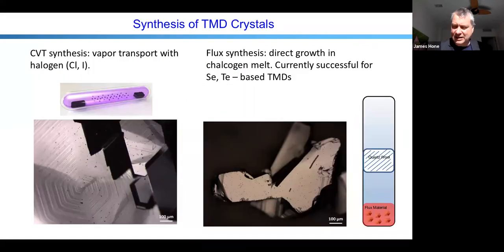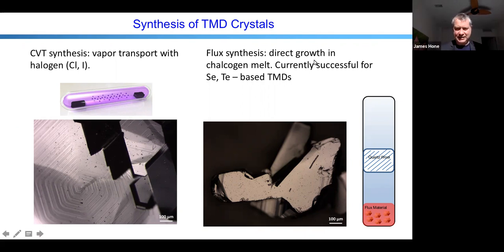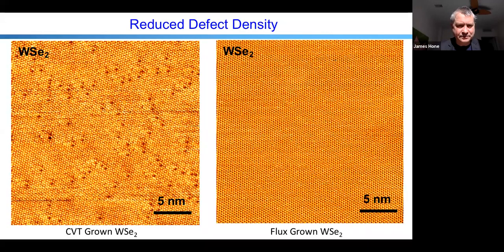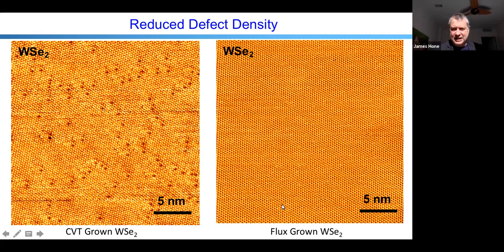About four years ago we started growing our own crystals. Instead of using CVT, we mostly use a flux synthesis technique. This involves sealing the metal and chalcogen powders inside a quartz ampule, evacuating it, then heating in an oven at about 1000°C for some weeks, then slowly cooling down to obtain our crystal. Comparing STM images: on the left, a highly defective sample grown by chemical vapor transport; on the right, at the same scale and atomic resolution, a sample of very high quality flux-grown tungsten selenide — much, much cleaner material.